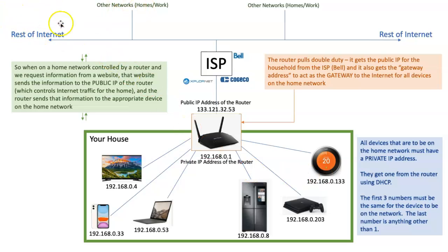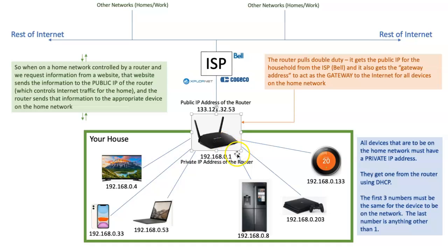A computer out on the internet is not allowed to access, say, the fridge unless the router allows it. The router acts as a bouncer or a guardian — it stands between the ISP, the internet, and the private network, trying to protect you from bad things and people trying to hack in. We call the router a firewall, because a firewall is a device that stops bad people from hacking in — it's protection between you and the internet. It's also called a gateway, because it is the gateway to the internet for all of these devices.